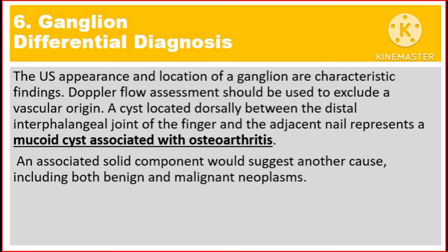Differential diagnosis: The ultrasound appearance and the location of a ganglion are characteristic findings. Doppler flow assessment should be used to exclude a vascular origin. A cyst located dorsally between the distal interphalangeal joint of the finger and the adjacent nail represents a mucoid cyst associated with osteoarthritis.